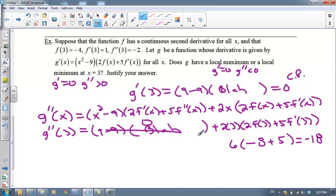It looks like I got a negative second derivative. So G has a relative maximum at X equals three because G prime equals zero and G double prime is less than zero there. So that's the second derivative test. And I will see you guys tomorrow.